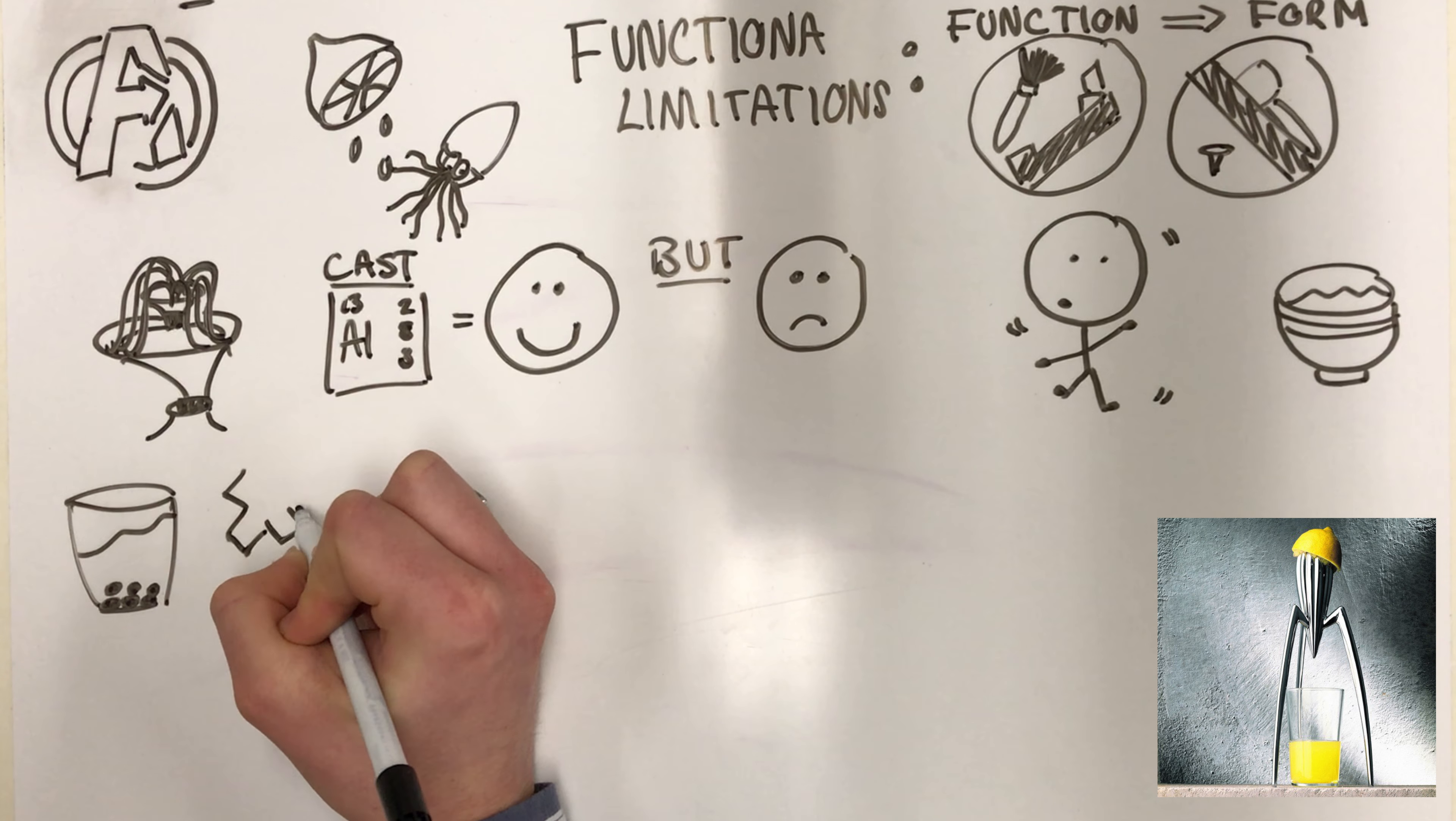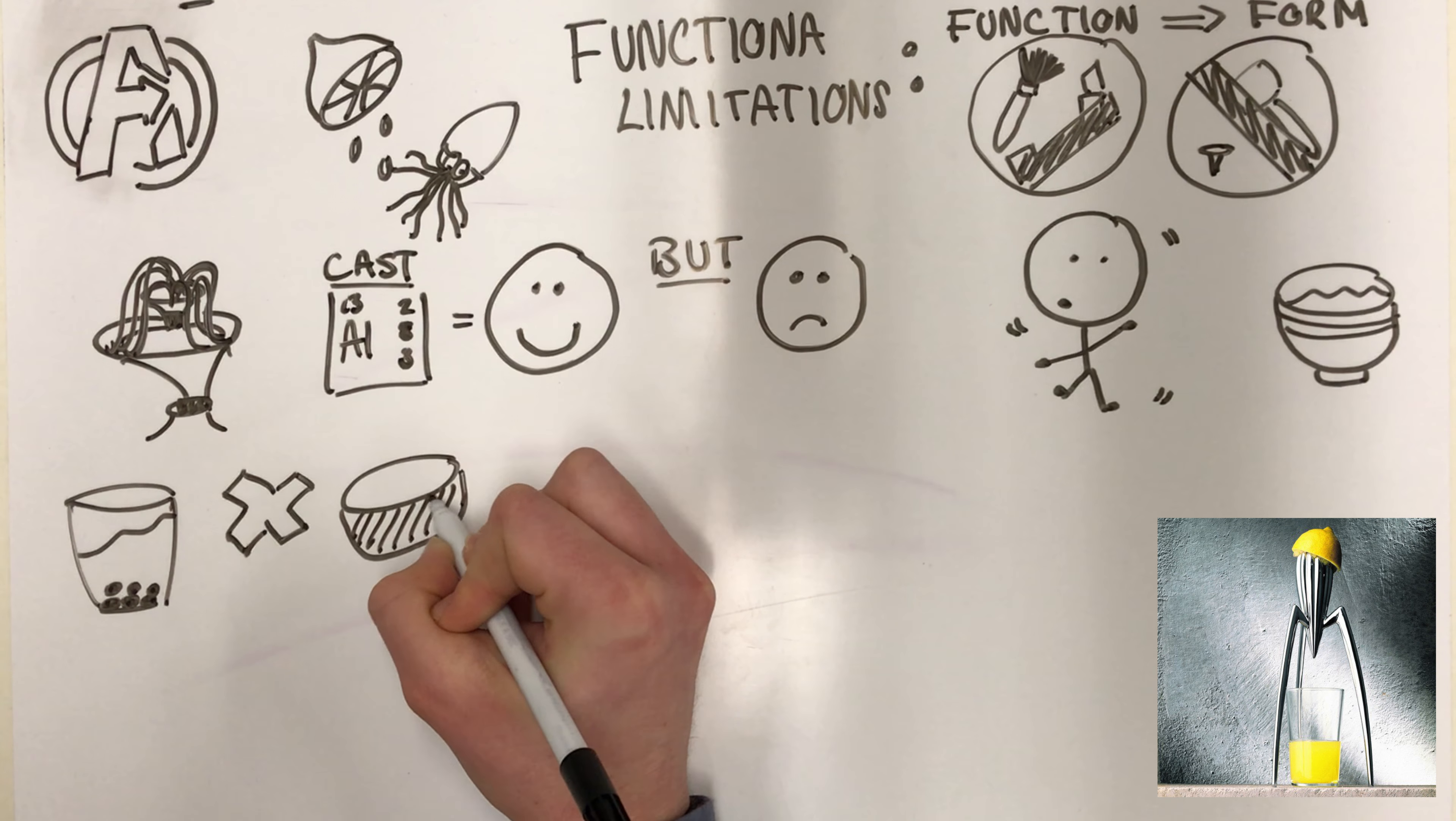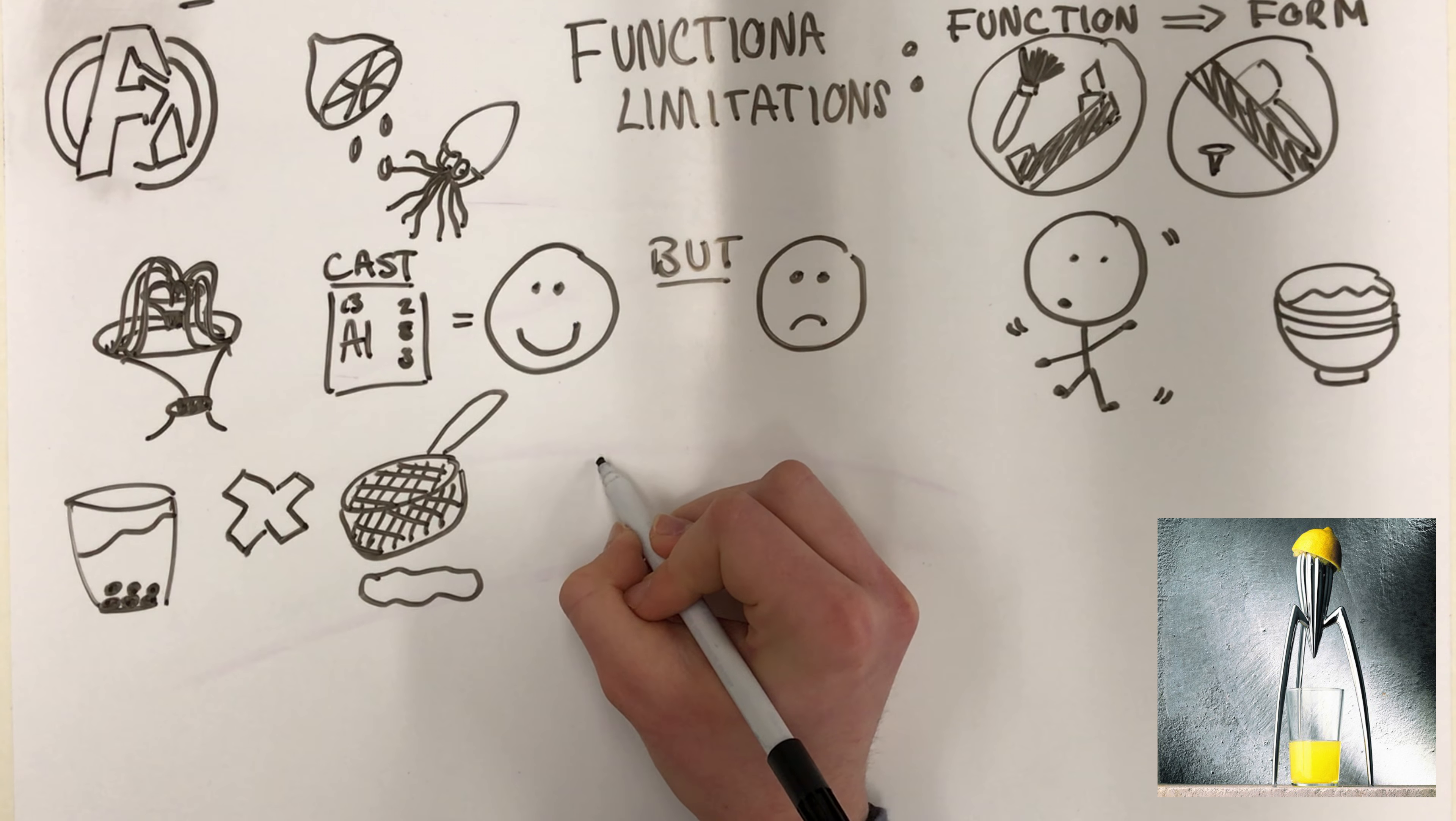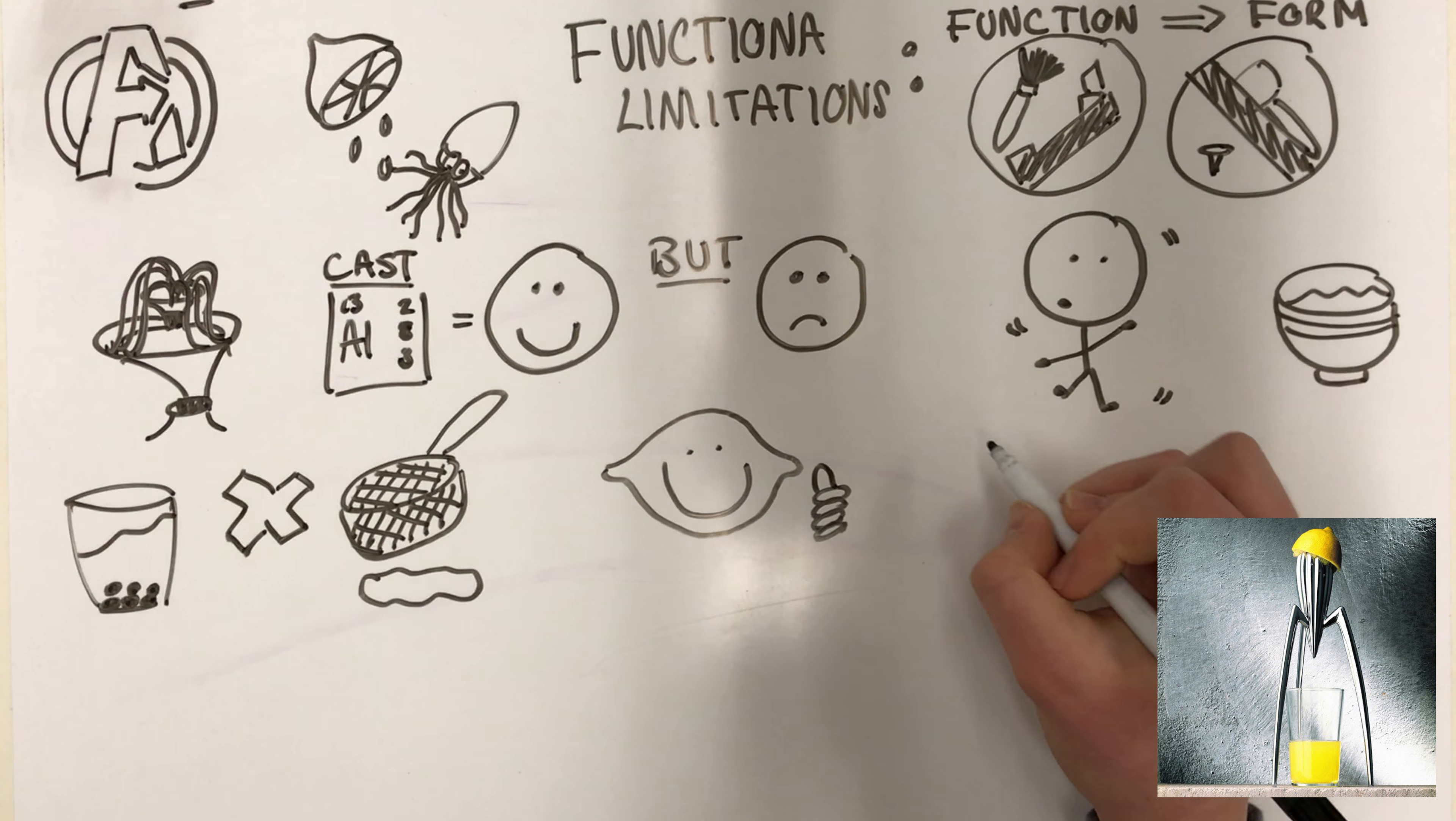There is also no way of separating the pips from the juice. Also the pips often get trapped in the grooves of the legs. Finally, the size of this juicer is specific for the size of a lemon. Therefore, larger fruits such as an orange can't be used.